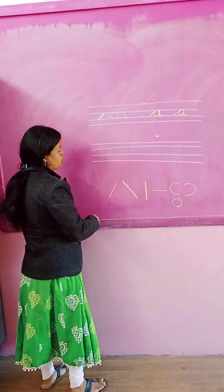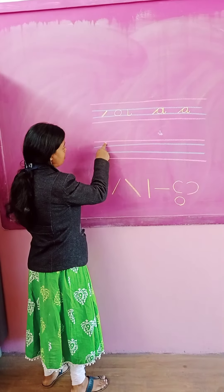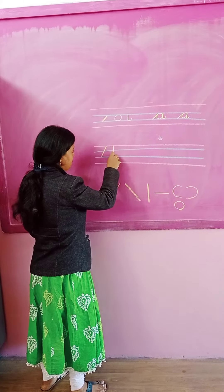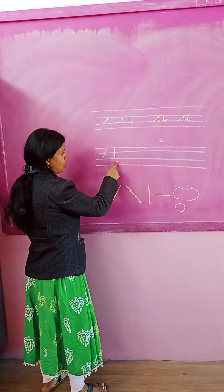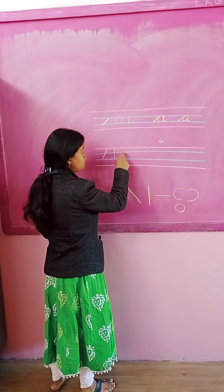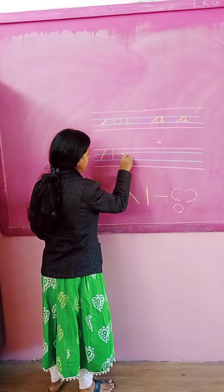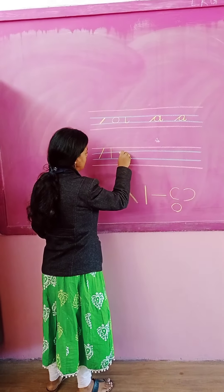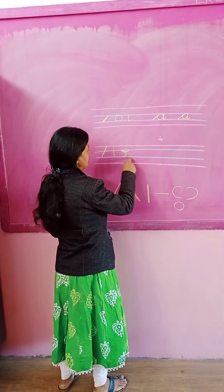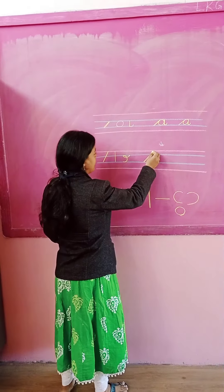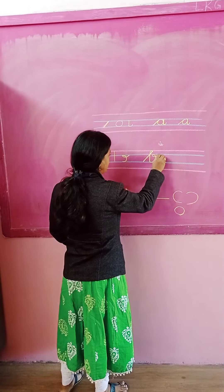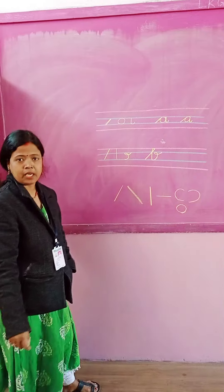Now, B. How will we write B? Again, one slanting line from the red line to the second blue line, okay? One straight line from the first red line to the second blue line. And now, one curve between these two lines — from the first blue line to the second blue line — and we will make one knot here, in this way. We will join this line. This is slanting line, straight line, curve — and this is B.